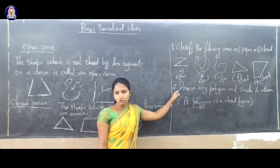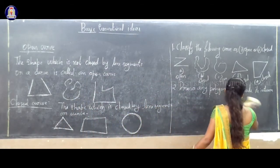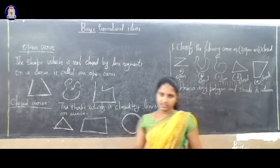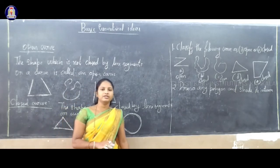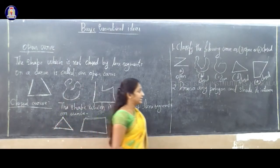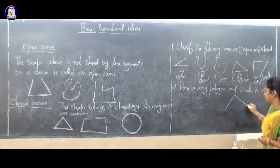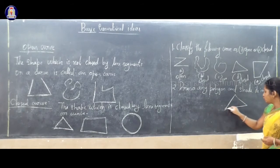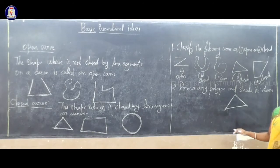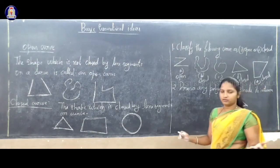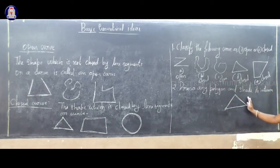The second question: draw any polygon and shade its interior. What is a polygon? Polygon means a closed figure closed by line segments. You can draw a triangle — triangle is a polygon. Or you can draw rectangle, square, pentagon, hexagon, heptagon — these are all polygons.